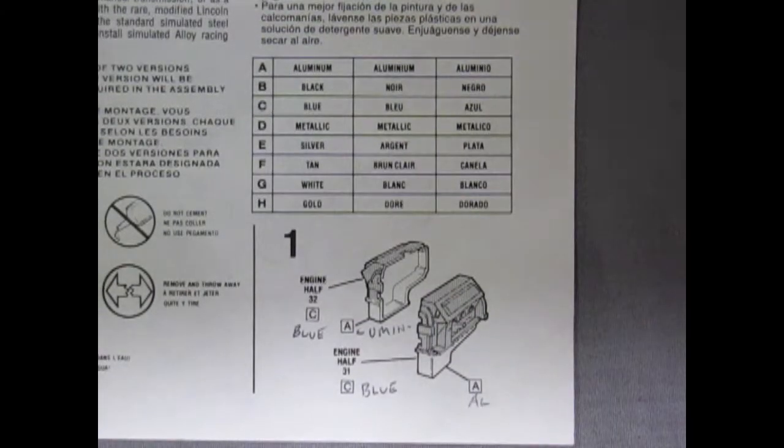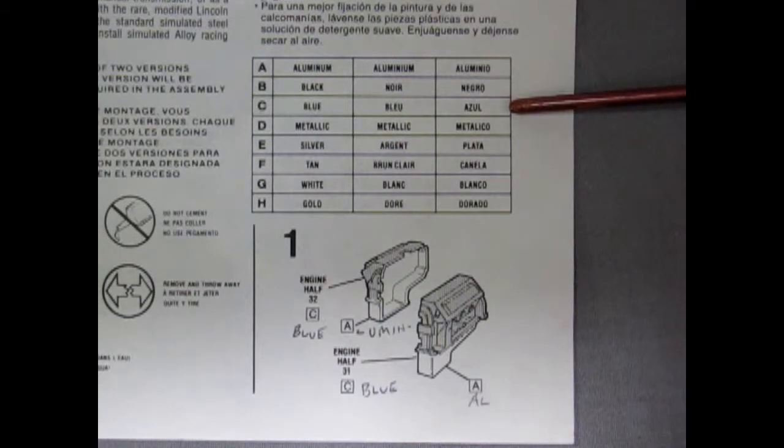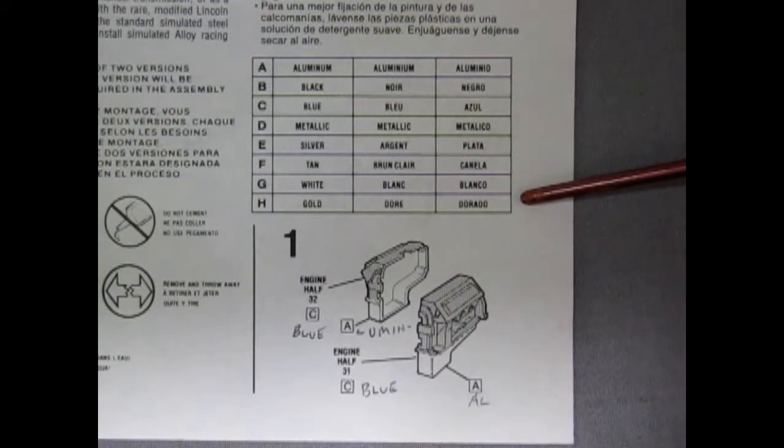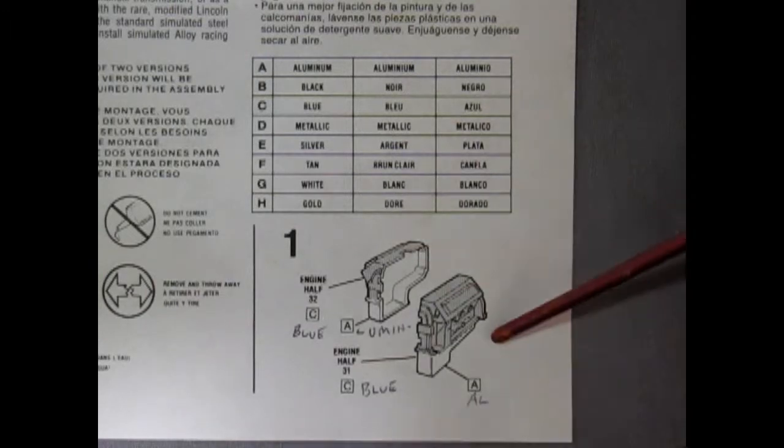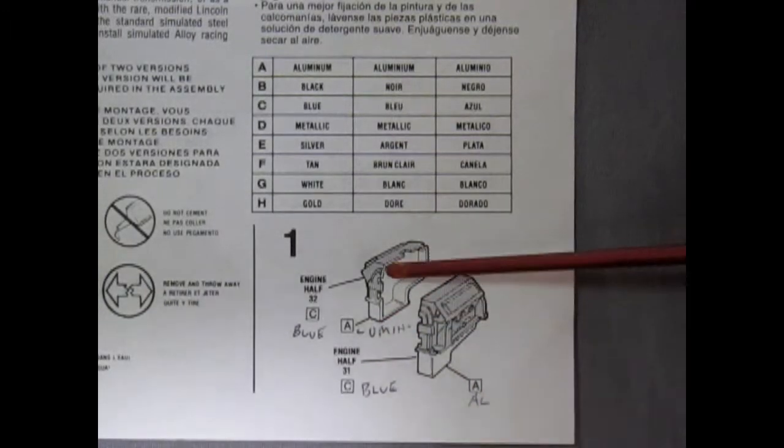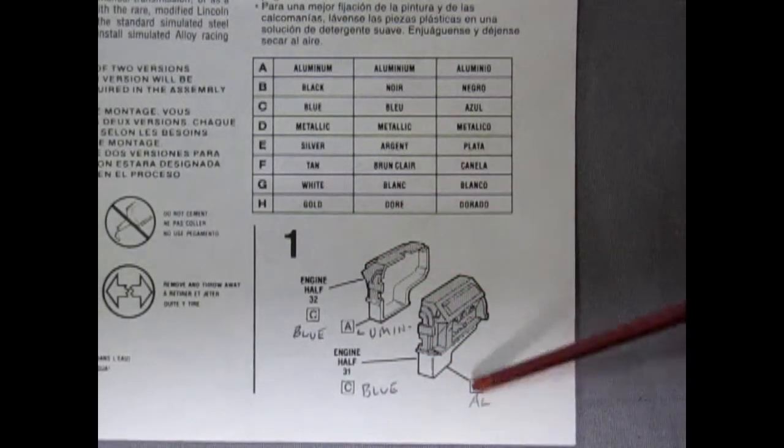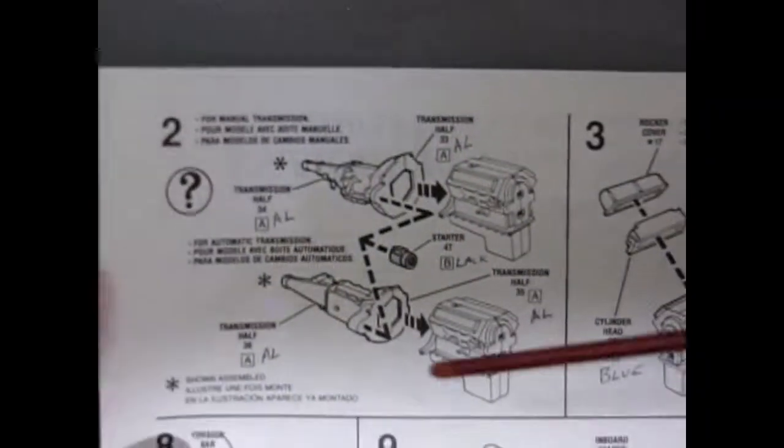As you can see we have our colors starting with A for aluminum, B for black, C is blue, D is metallic, E is silver, F is tan, G is white, and H is gold. We can see our two halves of the engine going together. It's got the oil pan molded underneath, so you're going to have to scrape your seam lines off of this and make it look really nice so that it gets painted properly.